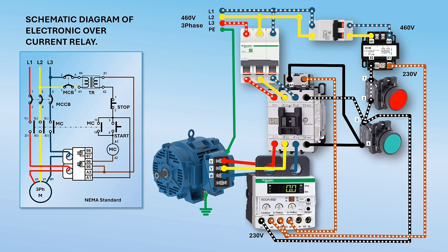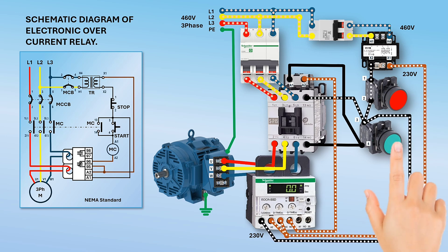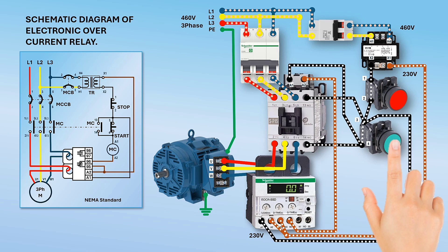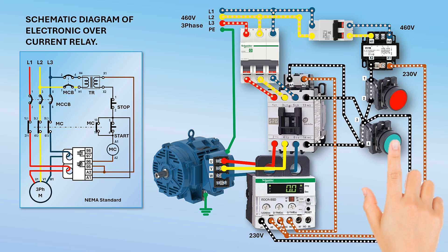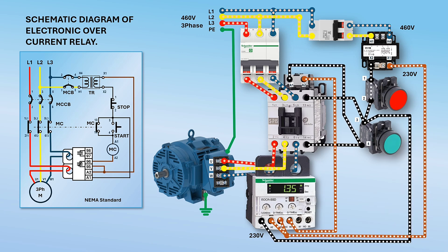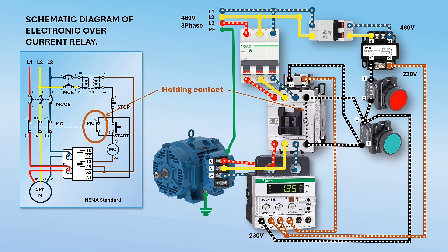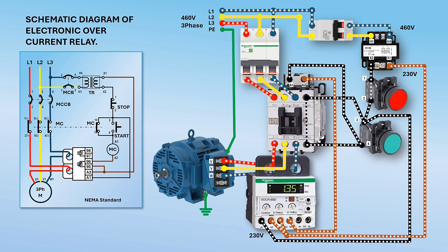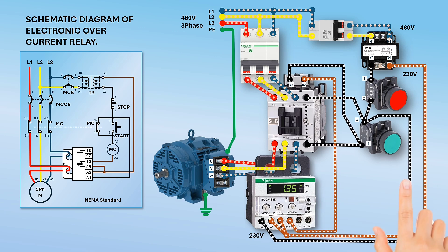At this condition, the motor is ready to start. Press the start button — the normally open contact of the push button will close and voltage will be available at contactor coil A1. Once the contactor is energized, all of its main contacts close, supplying voltage to the motor to make it run. At this instant, even if you release the start push button, the contactor will remain energized due to the closed position of the holding contact from the contactor.